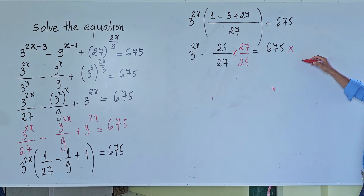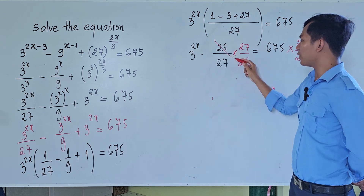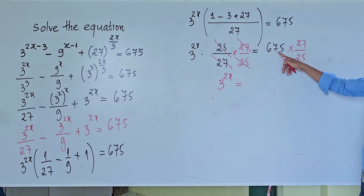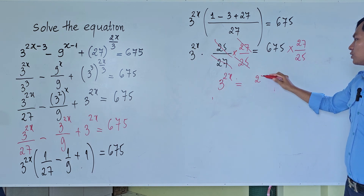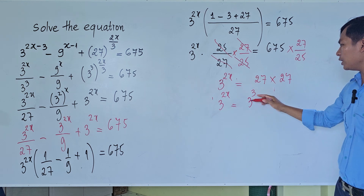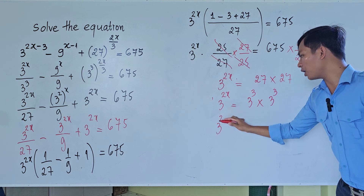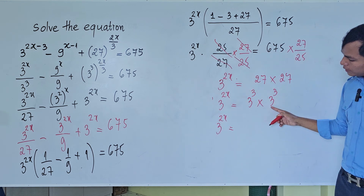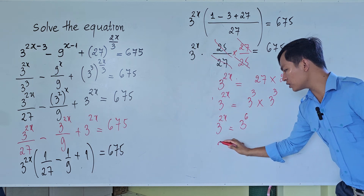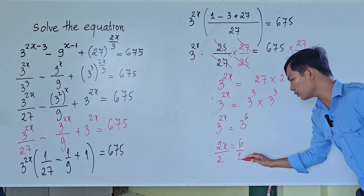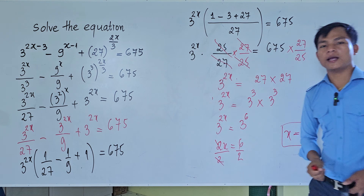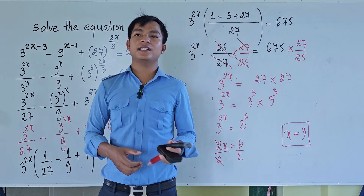Multiplying both sides by 27 and dividing by 25, we simplify: 25 and 27 cancel on the left, and 675 divided by 25 times 27 gives us 27. So 3 to the power 2x equals 27, which equals 3 to the power 3. Since the bases are the same, we set the exponents equal: 2x equals 3 plus 3 equals 6. Dividing both sides by 2, we get x equals 3. That's our answer! Thanks for watching — if you like my video, please subscribe to my channel for more exciting videos. Goodbye, see you in the next video!